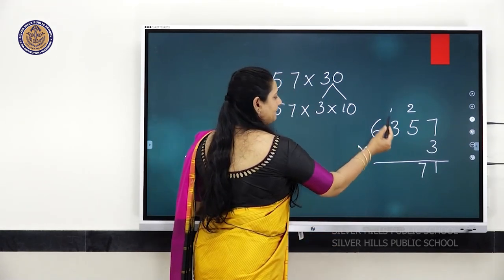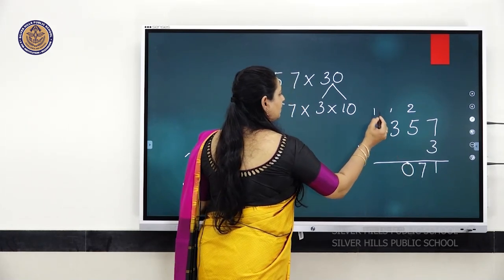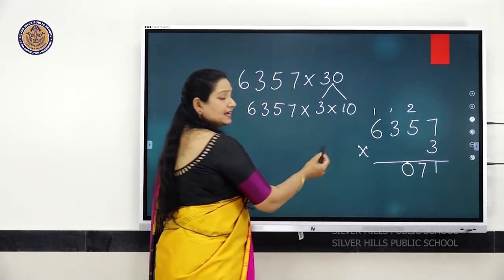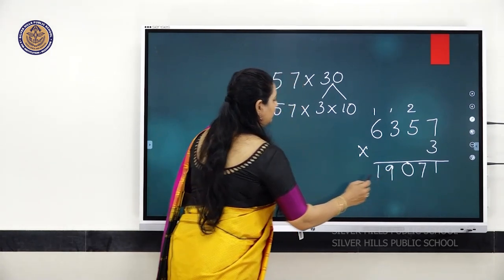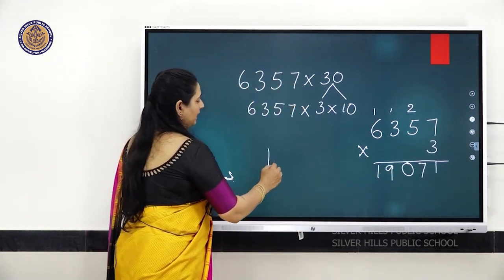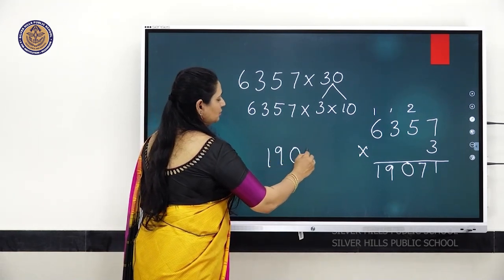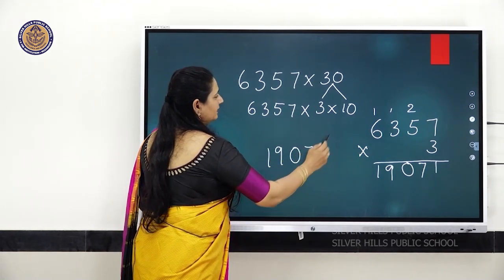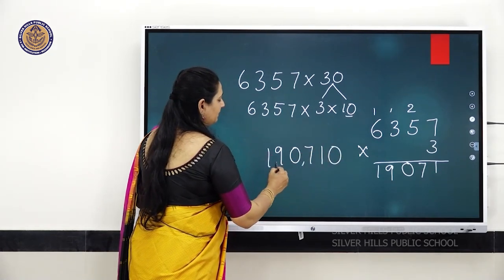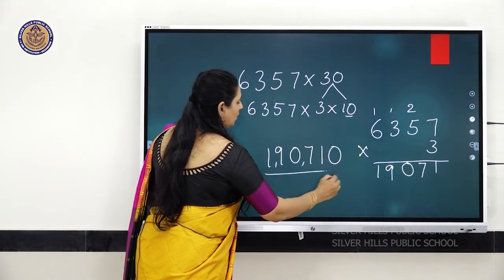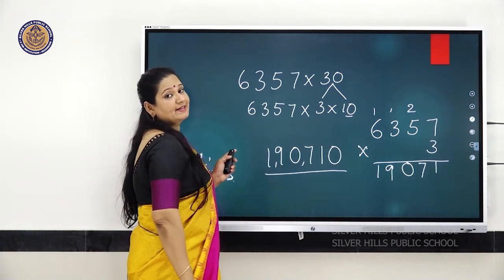Then 3 threes are 9, plus 1 is 10, write 0, carry over 1. Then 3 sixes are 18, plus 1 is 19. So you got 19,071. Now you are going to add this extra zero, so your number becomes 1,90,710.